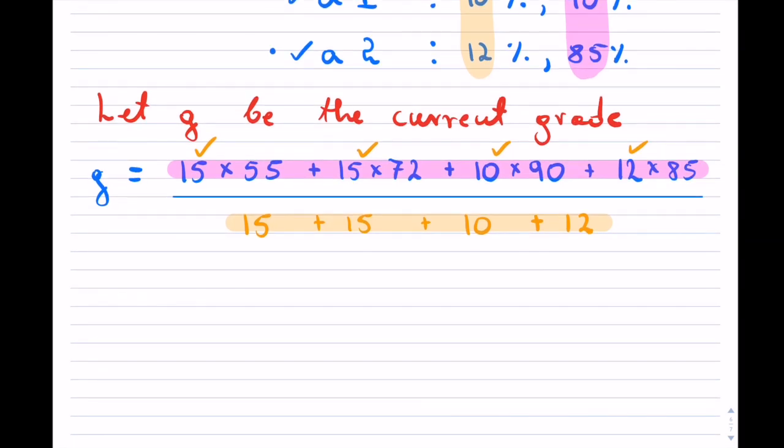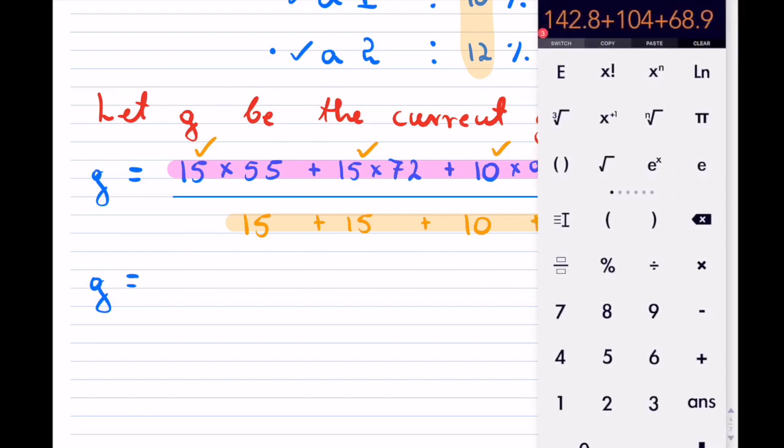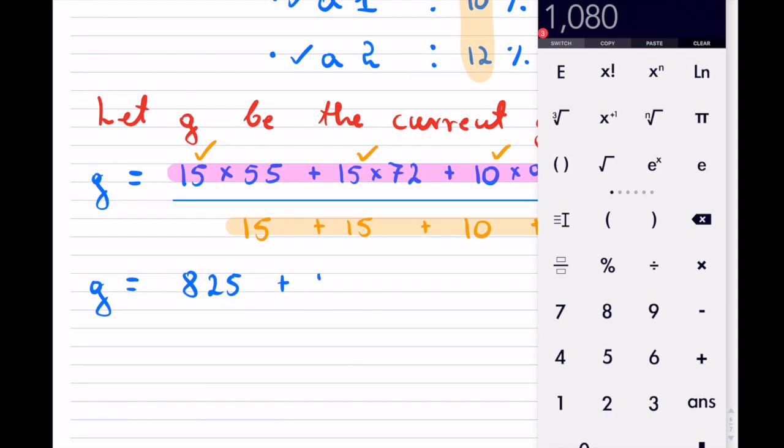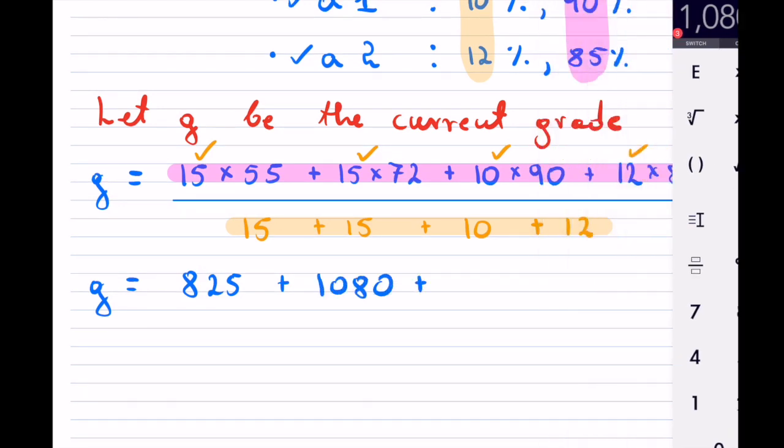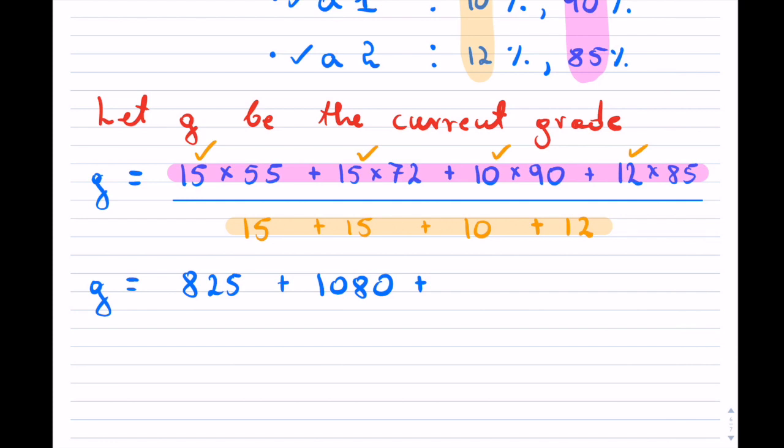So now we can calculate this. So our grade equals, and now let's calculate first everything on top there. 15 times 55, that's 825, plus 15 times 72, plus 10 times 90.